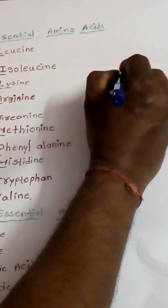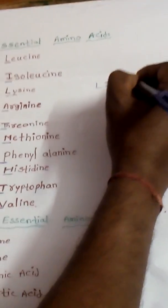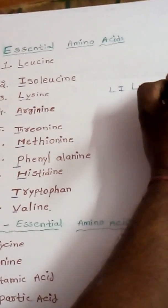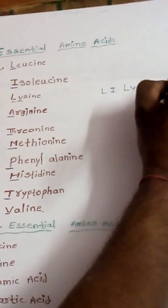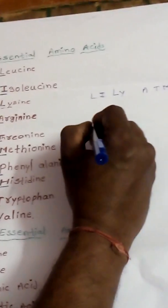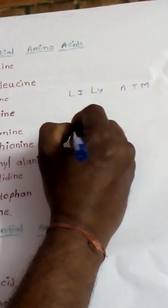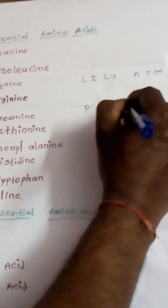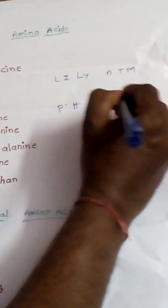So if we write those letters together, we get: Li, Ly, A, T, M, P, H, T, V.